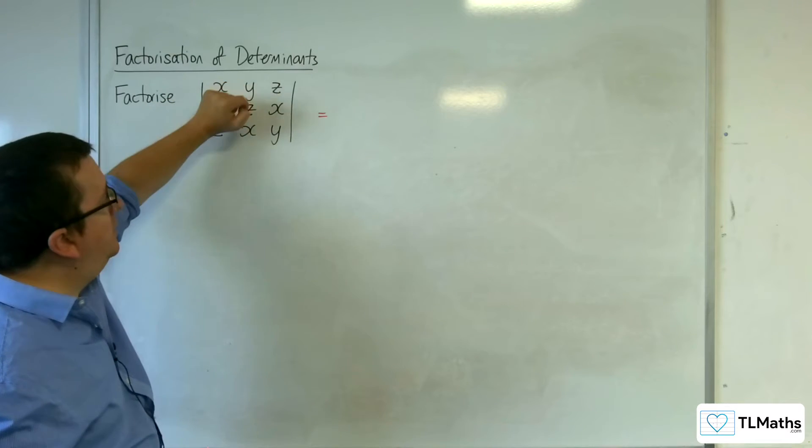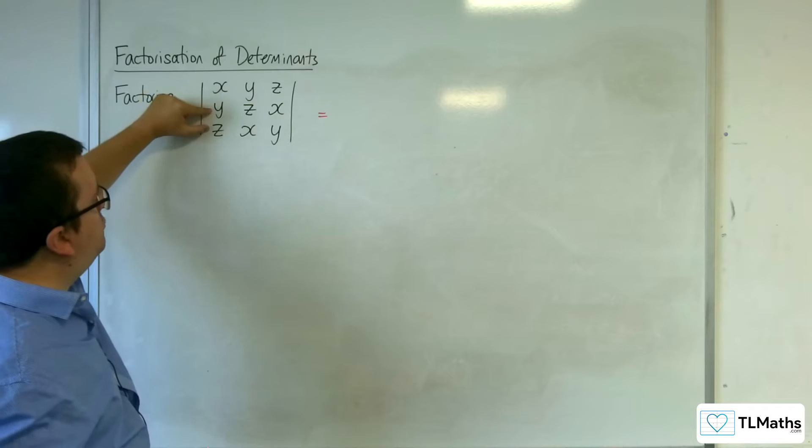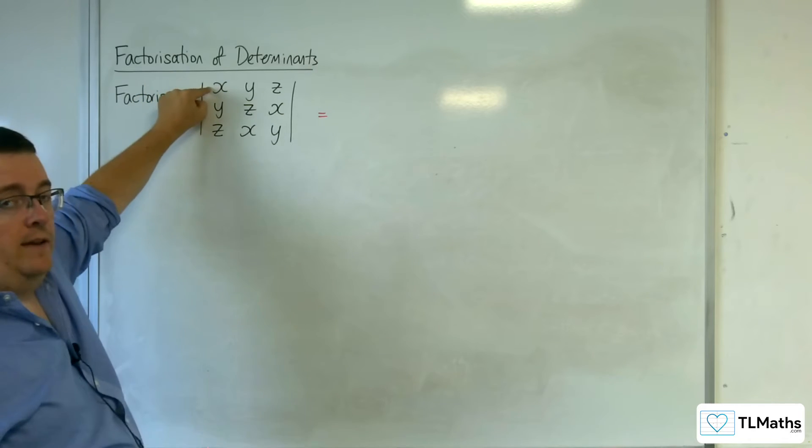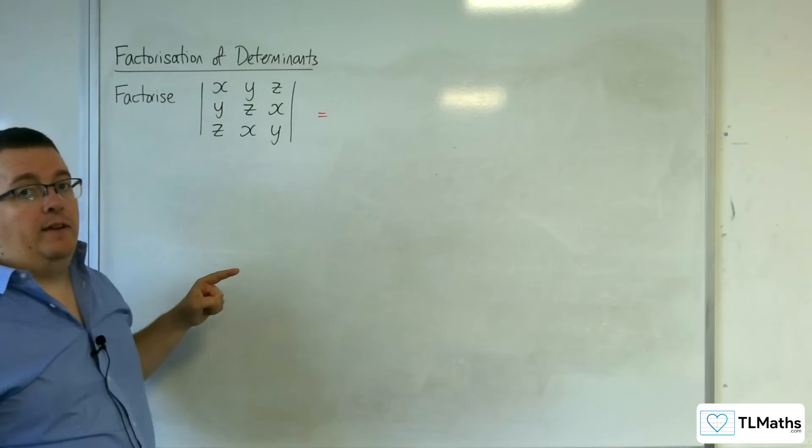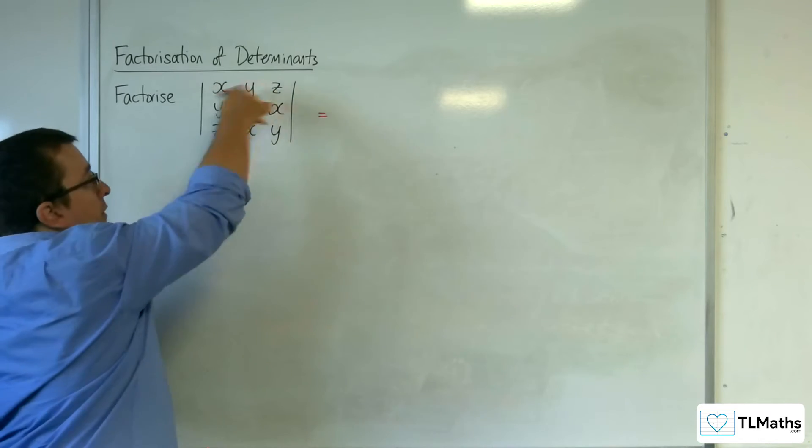y, z, x, y, z. So when you add rows 2 and rows 3 to row 1, then you're going to get an x plus y plus z in the top row for each of those elements.